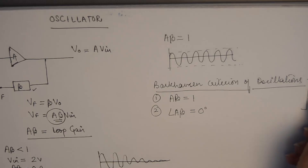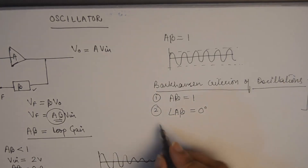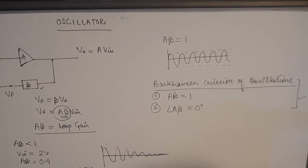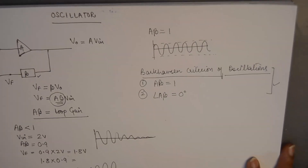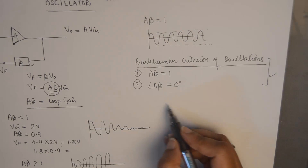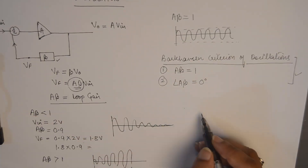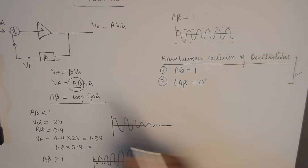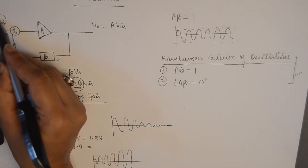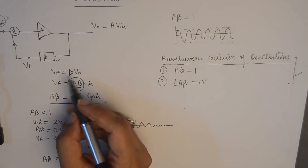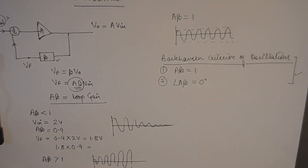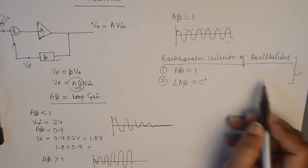After having discussed the Barkhausen criteria, I would like to mention that whenever we use an oscillator practically, it does not have an input connected to it. That simply means an oscillator works on a zero input signal. If there is no input — Vin is 0 — the oscillator is still providing sustained oscillations at the output. This is a very interesting fact: in spite of providing zero input, it is still capable of providing sustained oscillations if the Barkhausen criteria is satisfied.